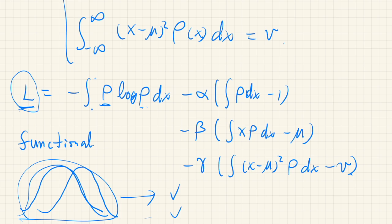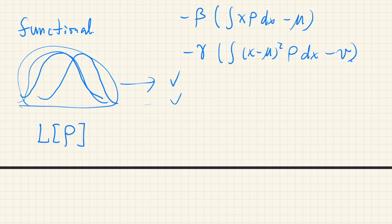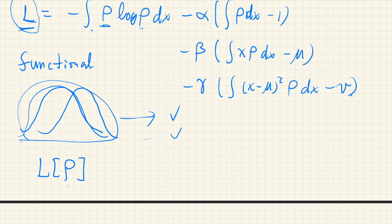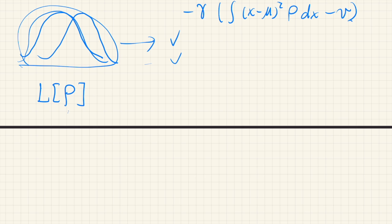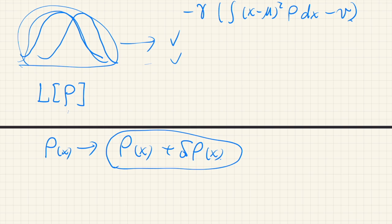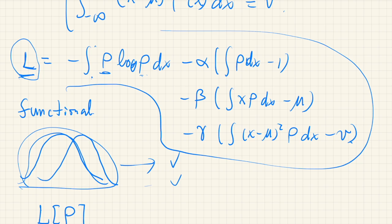To maximize this, we use a technique called functional differentiation, which may be familiar from Lagrangian or Hamiltonian mechanics. L is a functional of ρ, so to differentiate it we change ρ(x) to a slightly different function ρ(x) + δρ(x), where δρ represents a small perturbation.